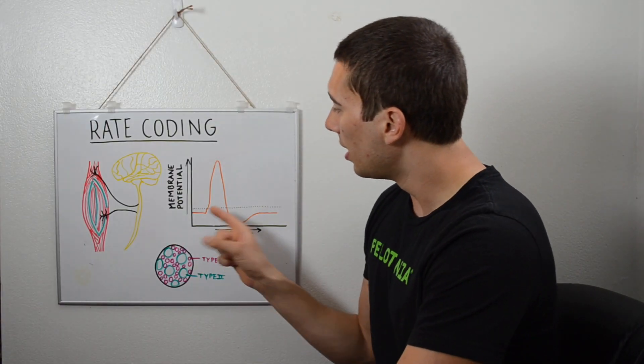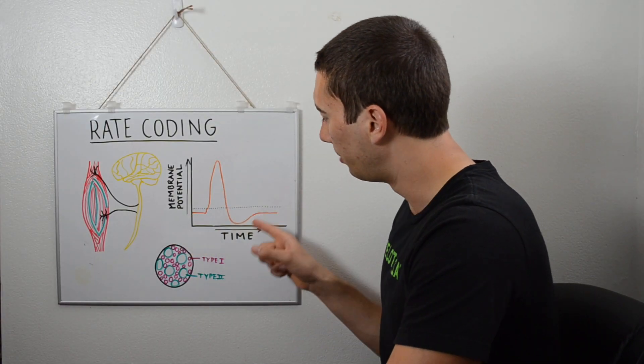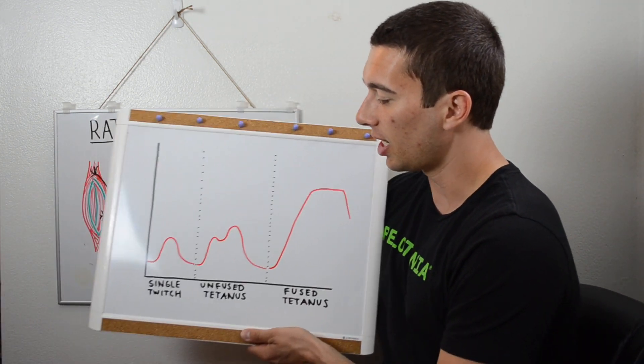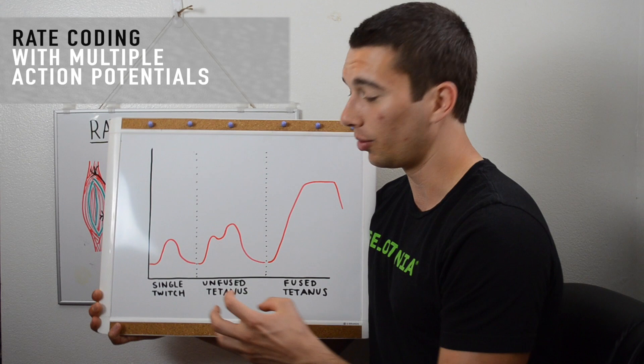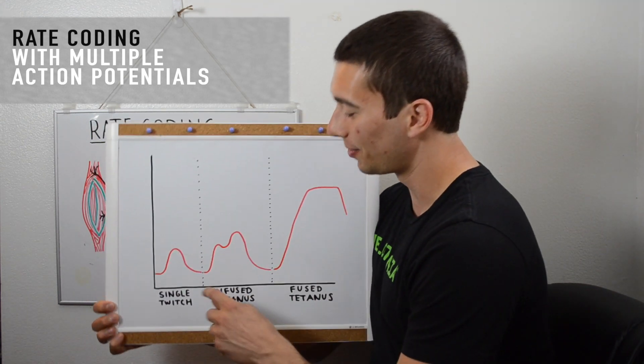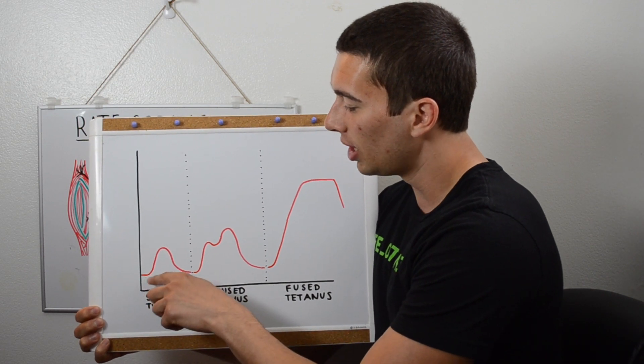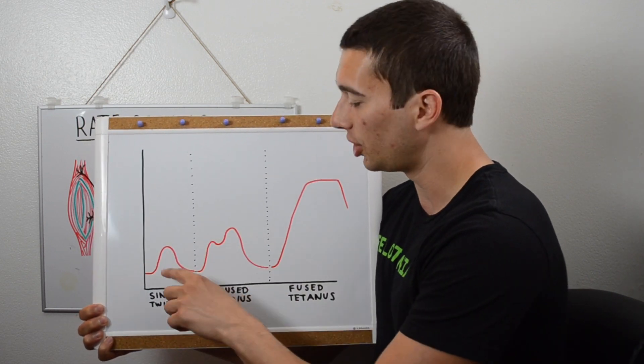So this right here is showing us one action potential. Now we're going to use this second graph here to talk about how we can actually do rate coding with multiple action potentials. So here you'll see a single twitch, and this would occur from an action potential propagating down through a nerve. That would be a single twitch.